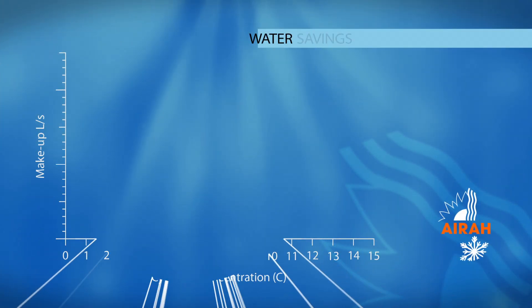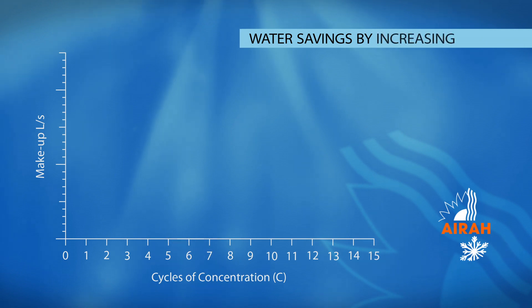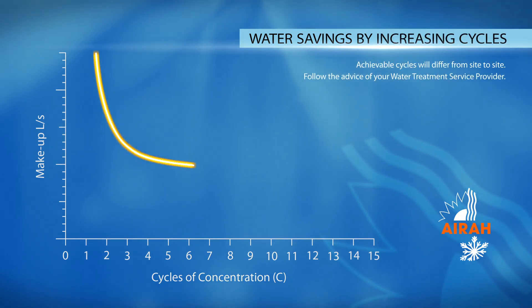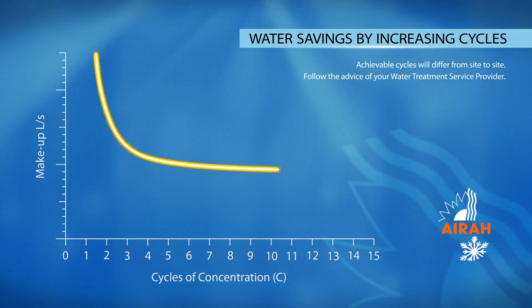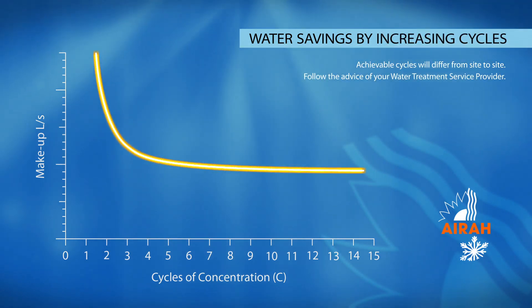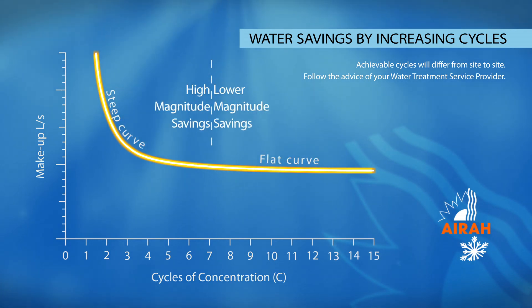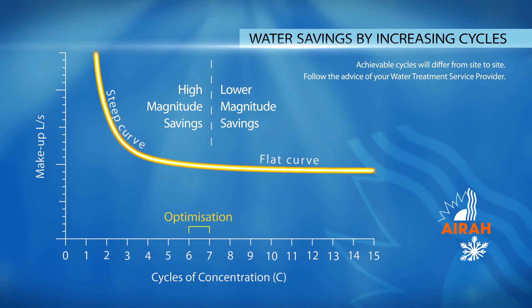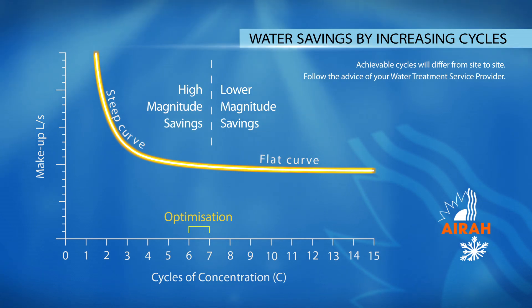Water savings achieved by increasing the cycles are not endless, as this graph demonstrates. Water savings are typically optimised at six or seven cycles before diminishing rapidly after rising above ten.